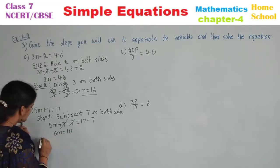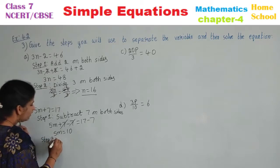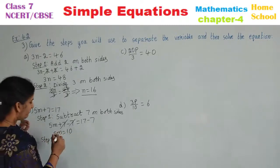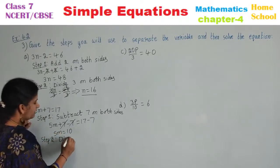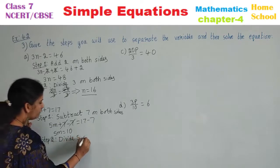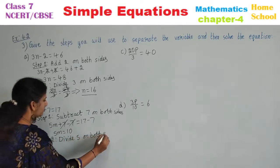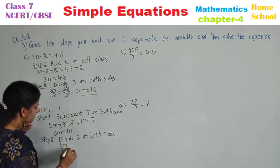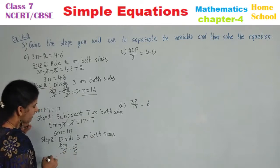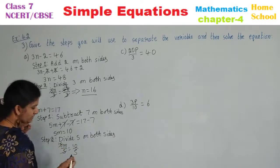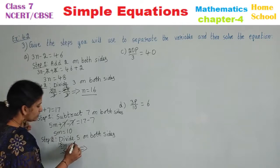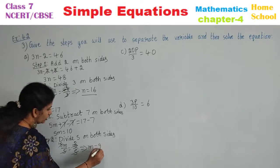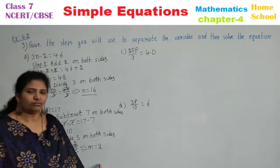Now second step — M is a variable and 5 is multiplied, so we need to divide with that number. Divide 5 on both sides. 5M by 5 is equal to 10 by 5. 5 and 5 get cancelled. 5 twos are 10. Finally, it implies M is equal to 2. What is the value of M? 2.